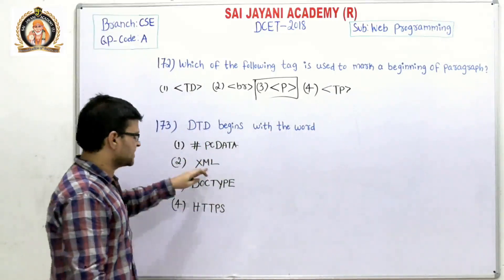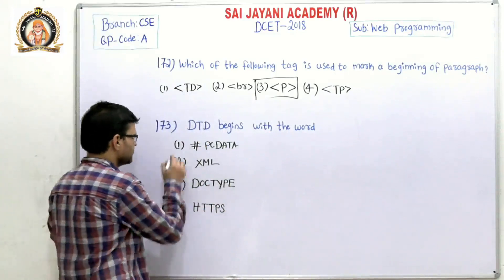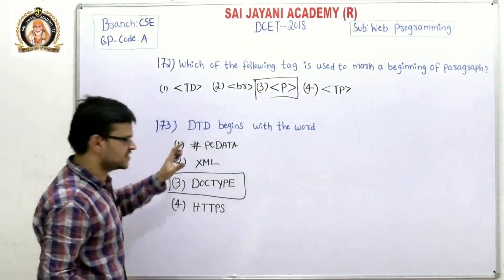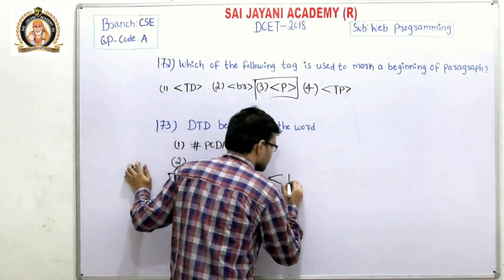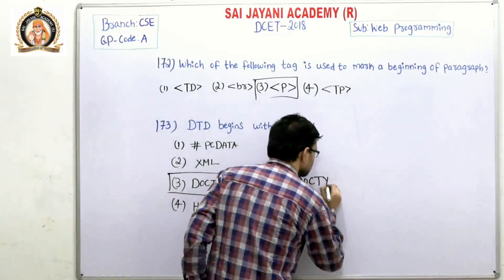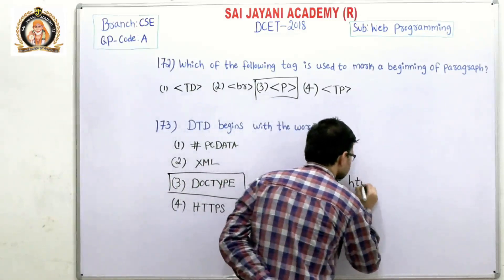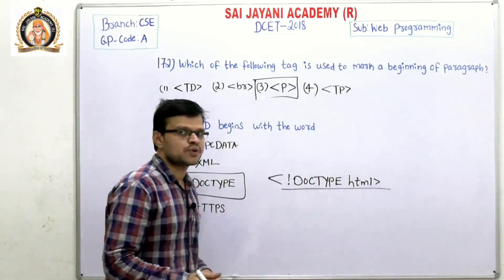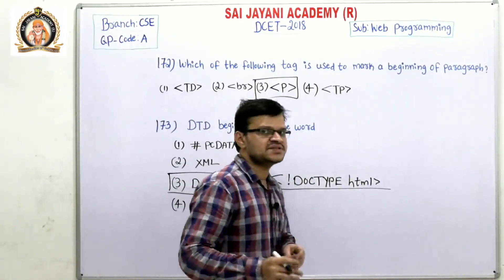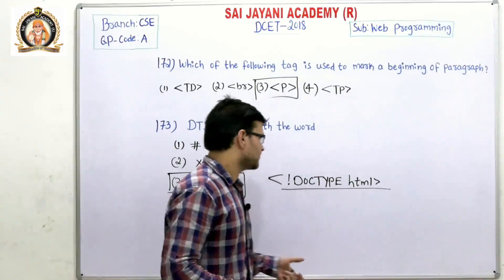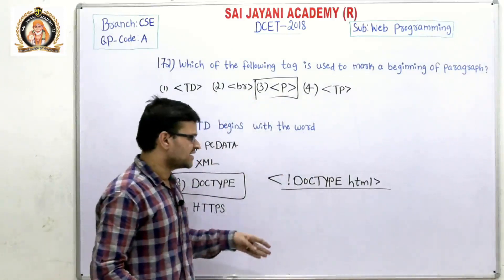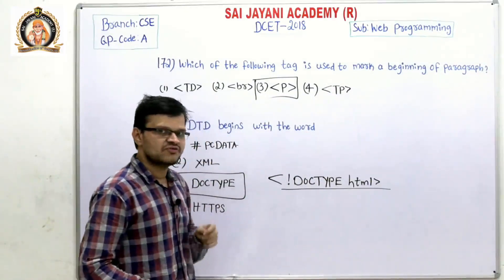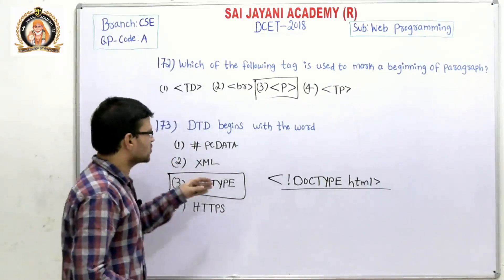Move on to question number 173: A DTD begins with the word — we have four options: hash, PCDATA, XML DOCTYPE, and HTTPS. For question number 173, the third option DOCTYPE is the right answer. DTD means Document Type Definition, written as DOCTYPE HTML. This instruction tells the web browser which version of the web page is being used.